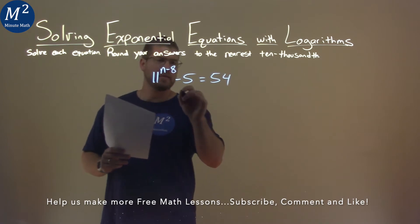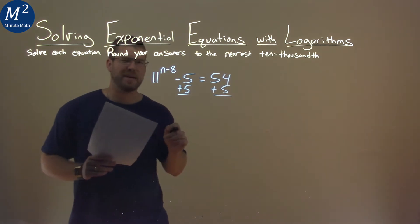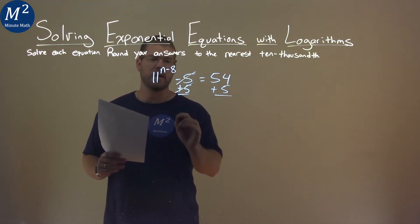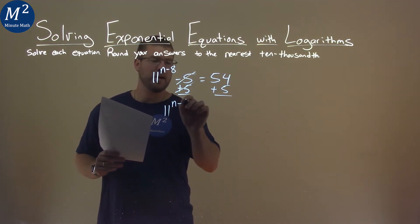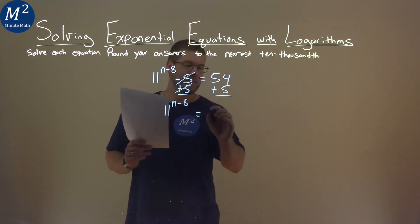Well, first thing I like to do is add a 5 to both sides here. Let's try to get this n with this power by itself. 5s cancel on the left, and we have 11 to the n minus 8, and that's equal to 54 plus 5 is, well, 59.